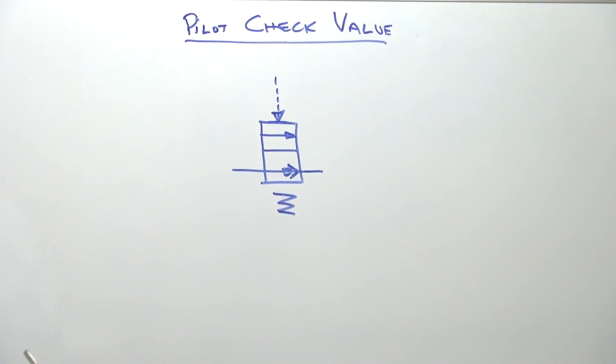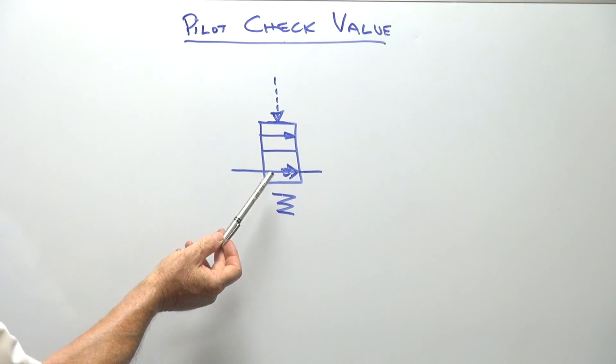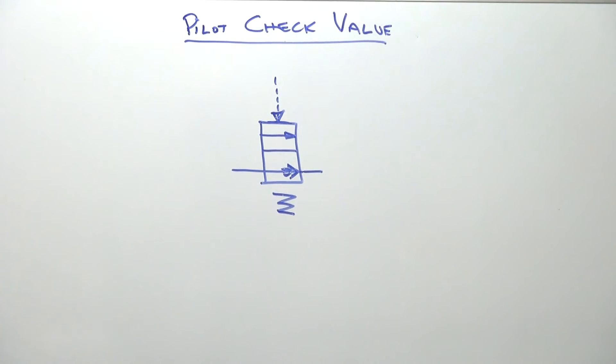So air signal off, checked. Air signal on, flow. You can use it for different applications such as where you want to control maybe a pinch valve that needs to be closed.